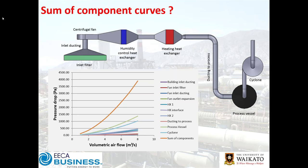Particulate emissions are an important topic these days, so there might also be a bag house on there, left off this particular example. Each one of those components — building inlet duct, fan inlet filter, fan inlet duct, fan outlet expansion, heat exchangers, dehumidifier, ducting, process vessel, and cyclone — is going to have a pressure drop requirement for a certain flow rate.